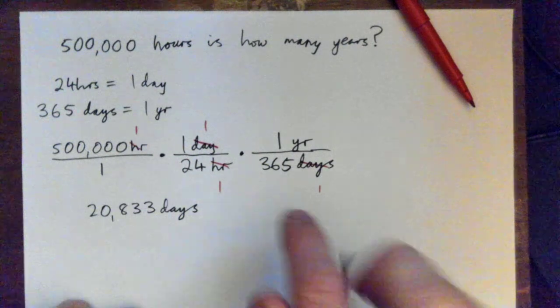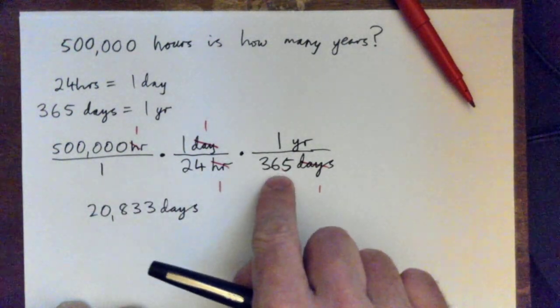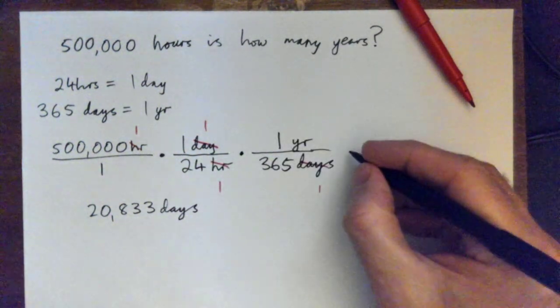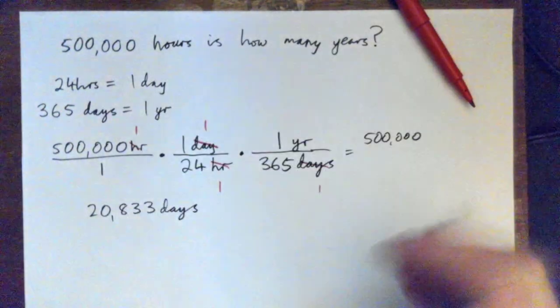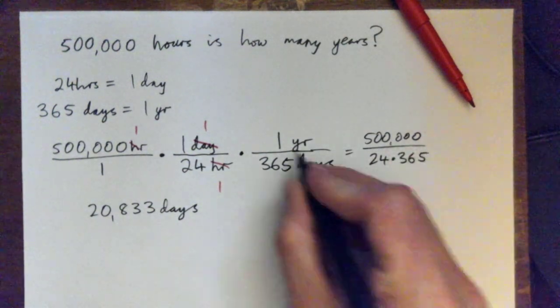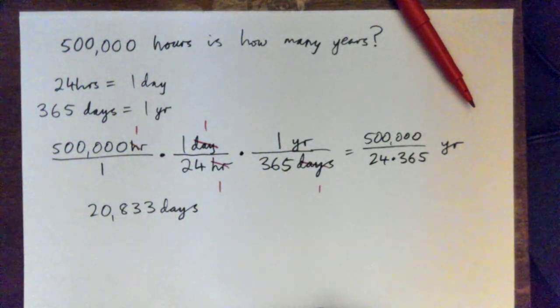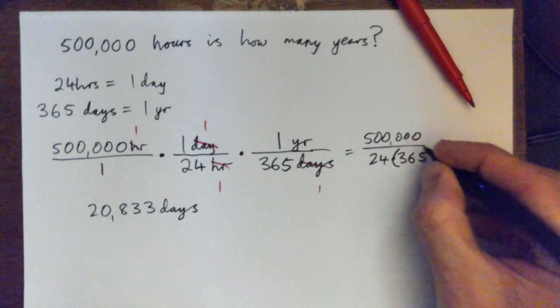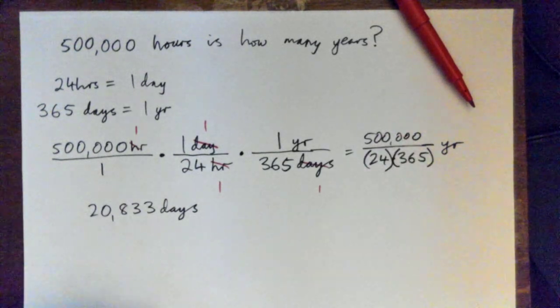So basically it's 500,000 over 24, times, and also over 365, right? So the whole thing becomes 500,000, after everything cross cancels, is over—and we got 24 times 365. And the only unit left now is YR for year, years. And so maybe I'll just put a parenthesis to show that these guys are being multiplied on the bottom. So it's 500,000...